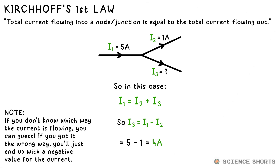You might also have to take a guess as to which way current flows into and out of junctions in order to use the first law, but that's okay. If you got it wrong you'll just end up with a negative current for one of the I's, just showing that it's going in the opposite direction to what you thought.